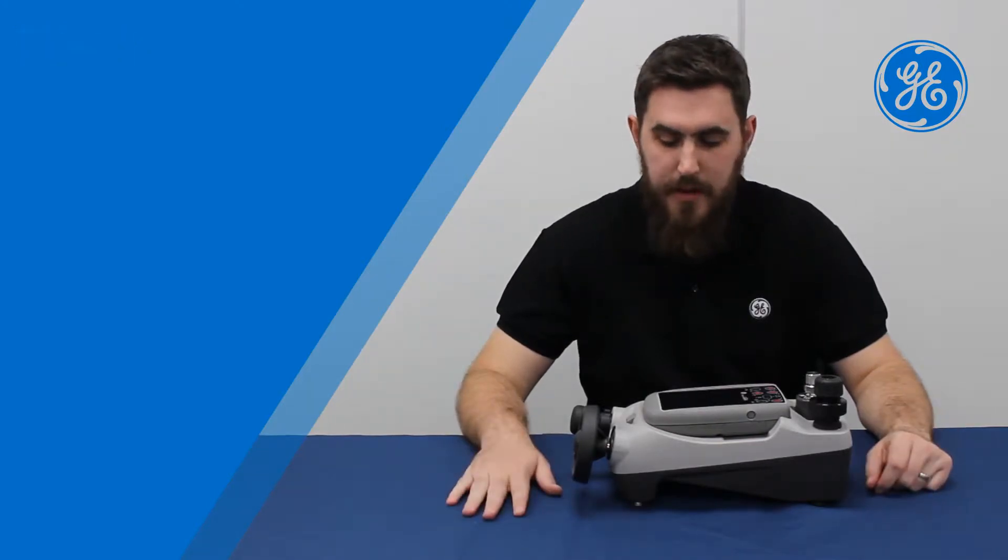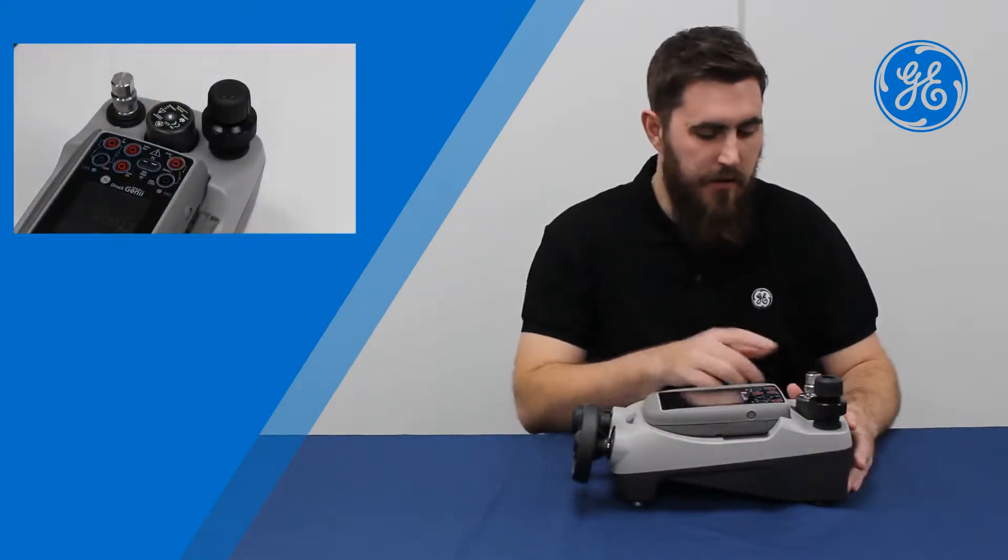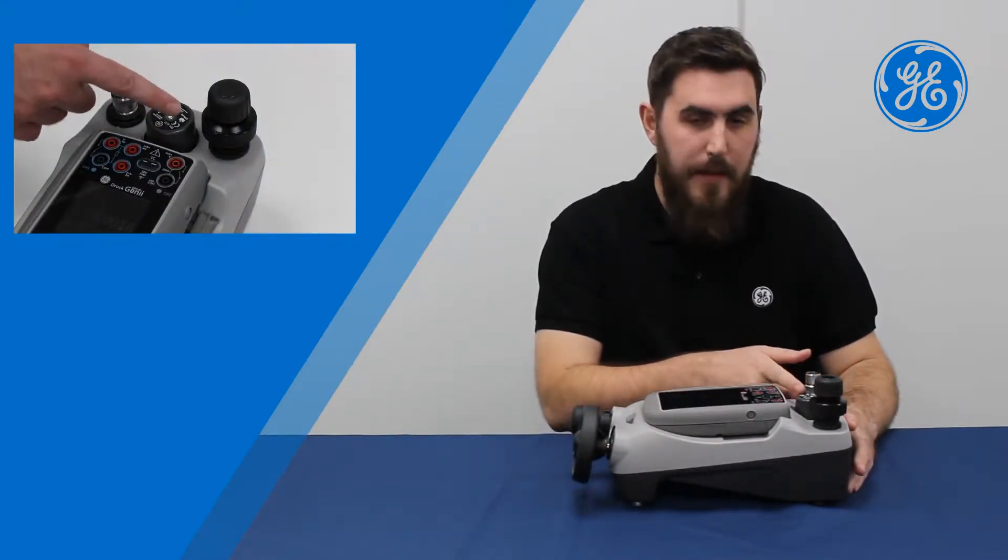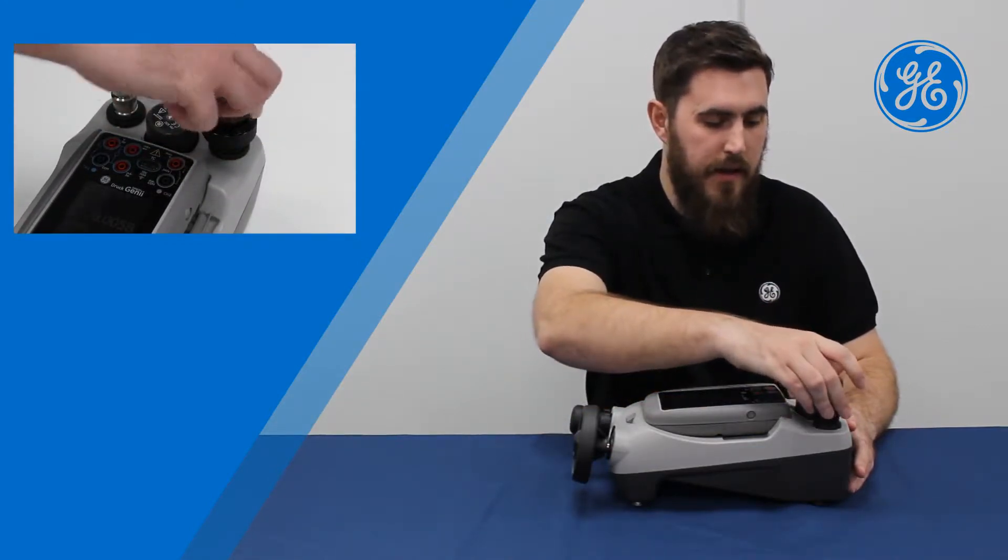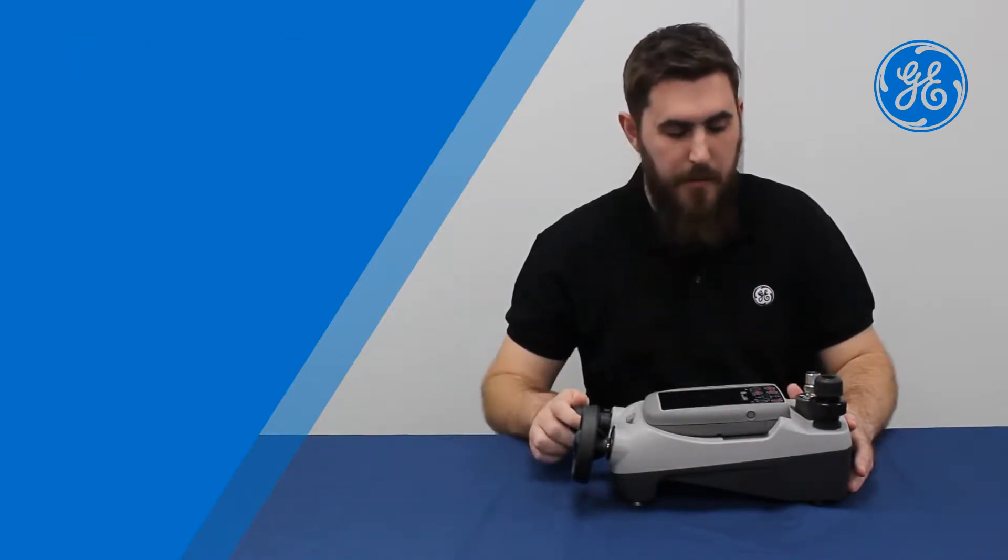So first off, we're going to set up the apparatus. I have my PV622 pressure base with my DPI620 Genie attached. Over here I've got a blanking plug, a PM620 100 bar sensor, the changeover valve and the pressure release valve. I've got my volume adjuster and my pump.